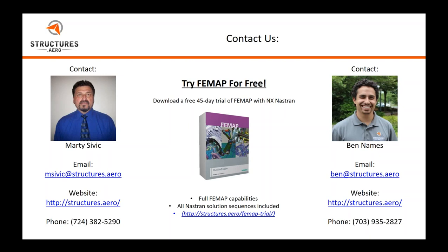Great question. CMAP writes these as MKAERO2 cards. The only difference is how you present the information. With MKAERO1, you list all your Mach numbers and then all your reduced frequencies separately. With MKAERO2, you list Mach number and reduced frequency in pairs. CMAP likely uses MKAERO2 for robustness, though I can't speak to the exact reasoning. They're equivalent — it's just a matter of how you want to write the cards.